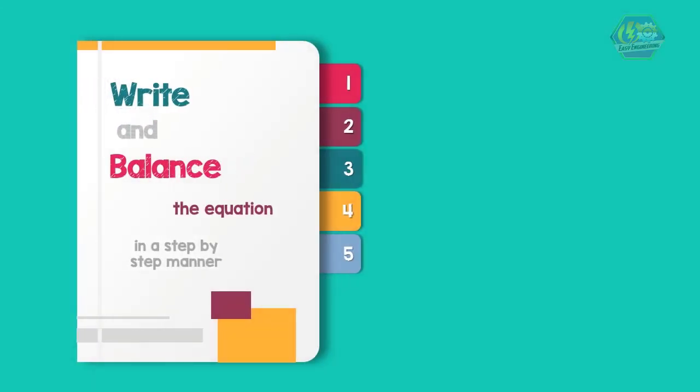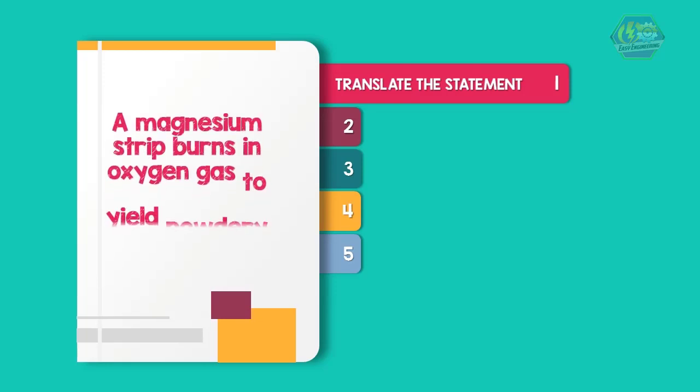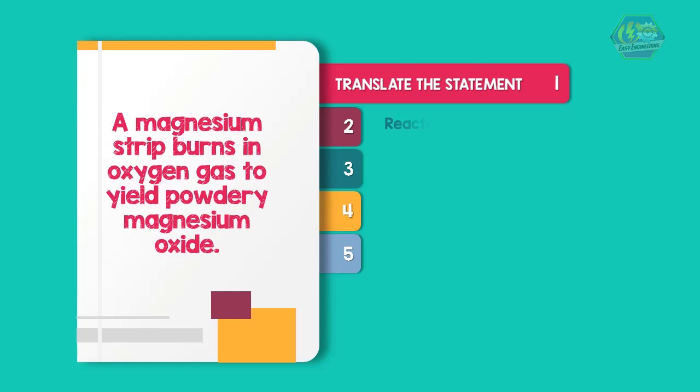Step 1: Translate the statement. A magnesium strip burns in oxygen gas to yield powdery magnesium oxide. We need to identify the reactants, which are the substances that react with each other. Here we have magnesium and oxygen. The oxygen is a diatomic molecule, so it exists as O2. Our product will be magnesium oxide, so we have Mg + O2 → MgO.